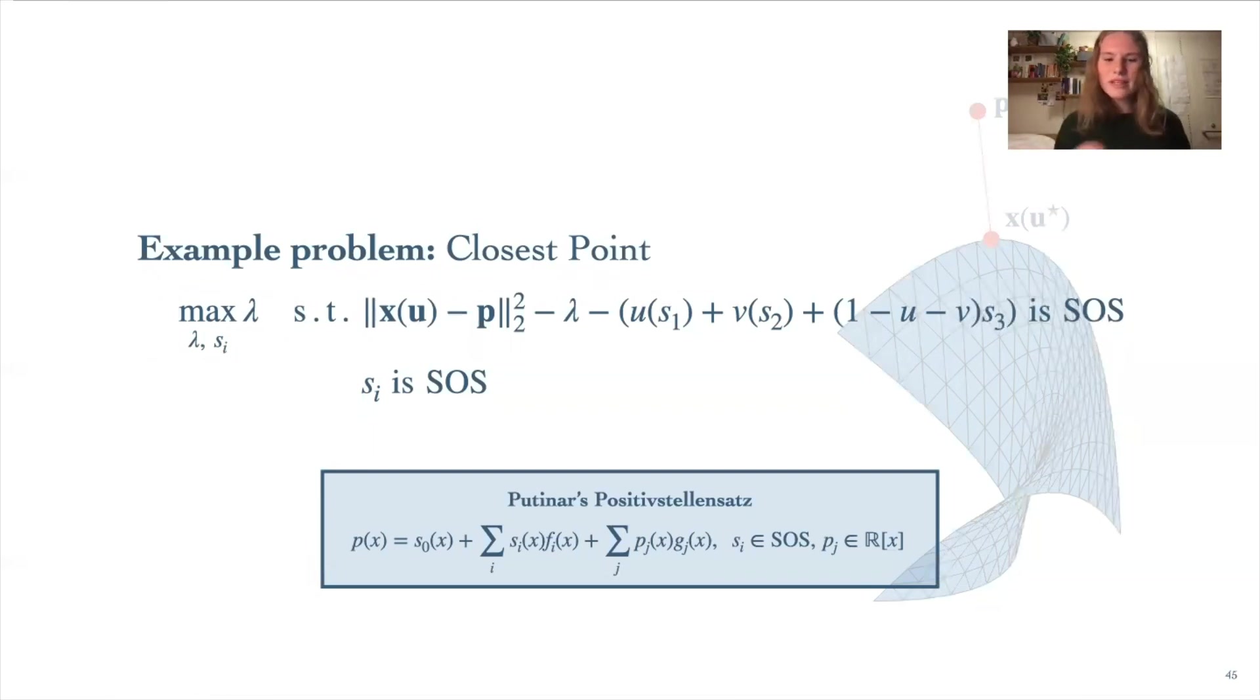So now let's apply this to our closest point problem. As mentioned before, we just have three f polynomials here. So we introduce three s polynomials constrained to be SOS, and then we move everything except for s_0 to one side, so we can constrain that to be SOS too. This finally gives us an SOS relaxation to this problem.